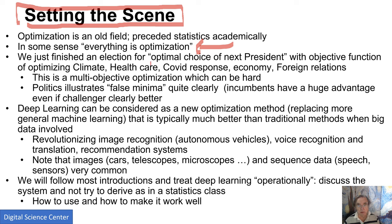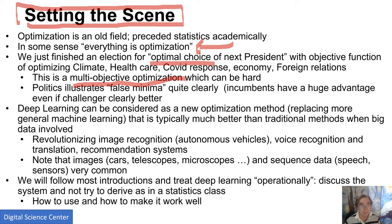We just had an election which was trying to make the optimal choice of a president where the objective function was actually quite complicated. It had climate, healthcare, COVID, economy, foreign relationships, personal charisma and things like that. This is called multi-objective optimization, which is actually quite hard because optimizing these different things is often in contradiction.